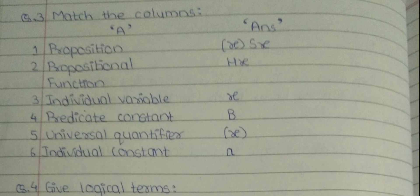Question number 3: Match the columns. First, proposition — the answer is universal quantifier SX. Second, propositional function — the answer is HX. Third, individual variable — the answer is X. Fourth, predicate constant — the answer is B. Fifth, universal quantifier — the answer is bracket X. Sixth, individual constant — the answer is A.